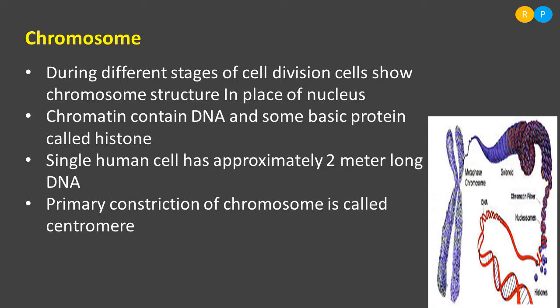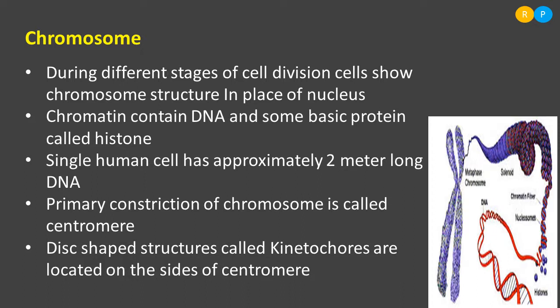On either side of the centromere we can find chromatids. Chromatids are nothing but arms — two arms are present. Around the centromere we can also find one more structure, a disc-shaped structure named as kinetochores. Kinetochores are located on the sides of the centromere. Kinetochores are very essential during cell division because spindle fibers get attached to the kinetochores and help in pulling chromosomes towards the opposite pole. This is the basic structure of a chromosome.